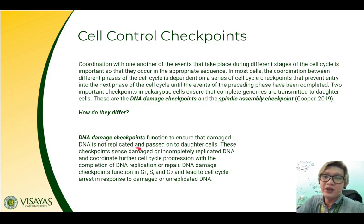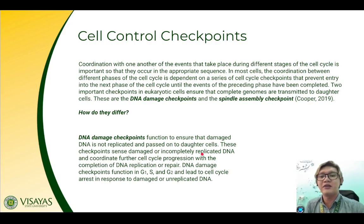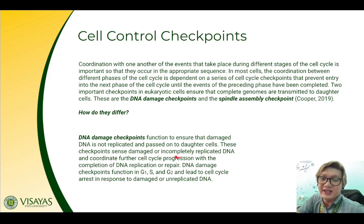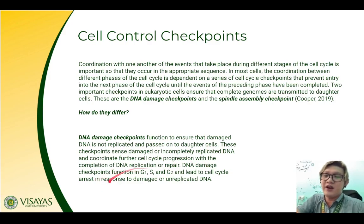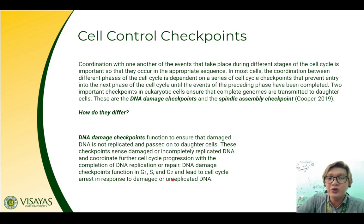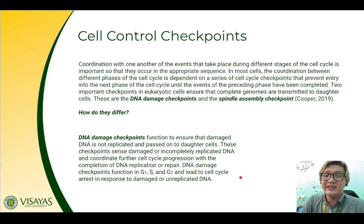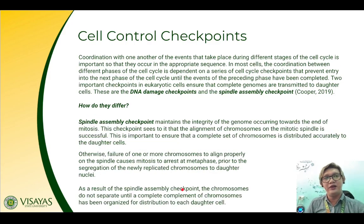DNA damage checkpoints function to ensure that DNA damage is not replicated and passed on to daughter cells. These checkpoints sense damaged or incompletely replicated DNA and coordinate further cell cycle progression with the completion of DNA replication or repair. DNA damage checkpoints function in G1, S, and G2 phase of interphase, and these lead to cell cycle arrest if DNA damage is detected at these stages or even if unreplicated DNA is detected.